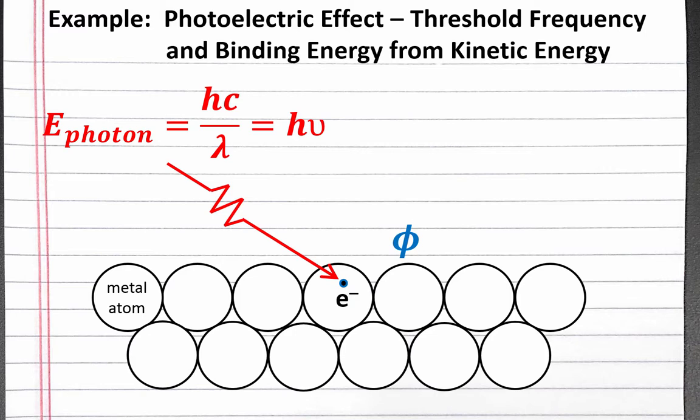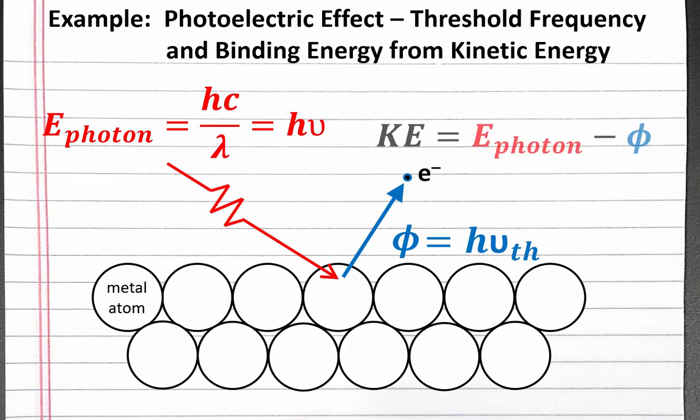The binding energy is the energy that must be overcome to eject the electron from the metal. If we start with a small energy for the photon striking the metal and slowly increase it, at some point the photon will have just enough energy to eject the electron. At this point, we're at the threshold frequency, when we just start to eject electrons from the metal. The energy of the photon striking the metal is Planck's constant times the threshold frequency, which is our equation for binding energy. If we continue to increase the energy of the photon beyond the threshold frequency, we're adding extra energy to the electron. Since energy cannot be created or destroyed, any extra energy beyond the binding energy goes into the kinetic energy of the ejected electron. So to calculate the kinetic energy, we subtract the binding energy from the energy of the photon.